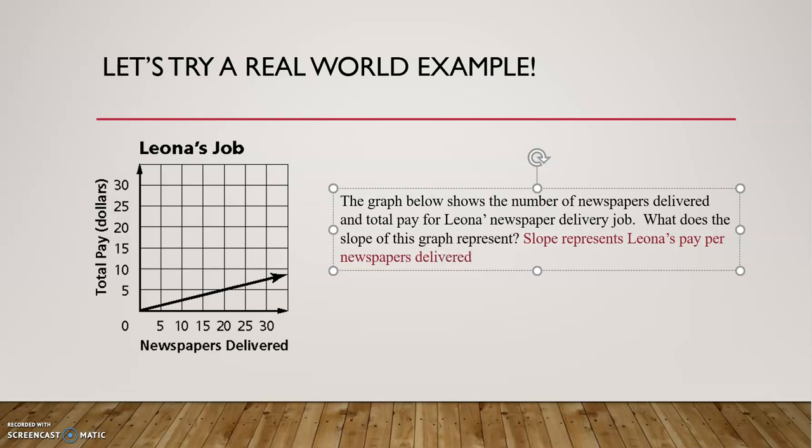Well, how much does she make every time she delivers a newspaper? Well, what you would have to do is actually find the slope of that line. And you can do that by finding any two points and then calculating the slope. So obviously, she makes nothing if she delivers none. So zero, zero is a point on that line.